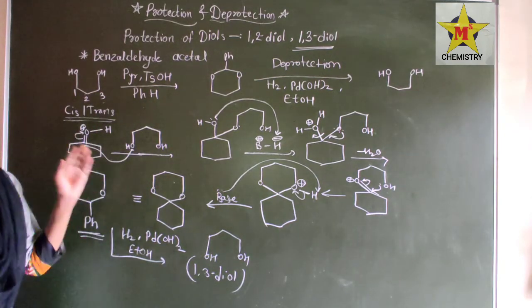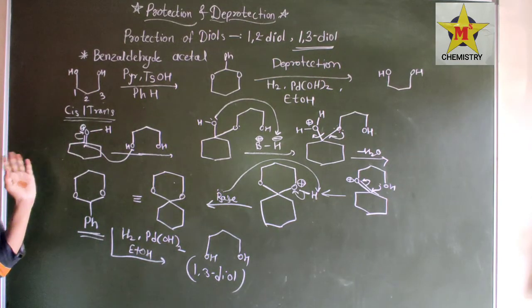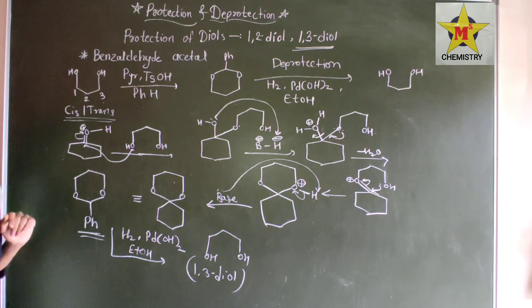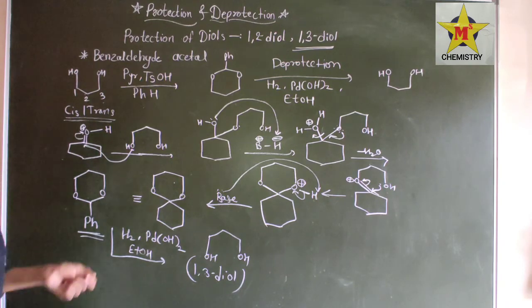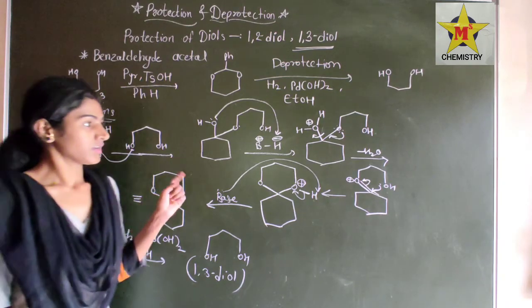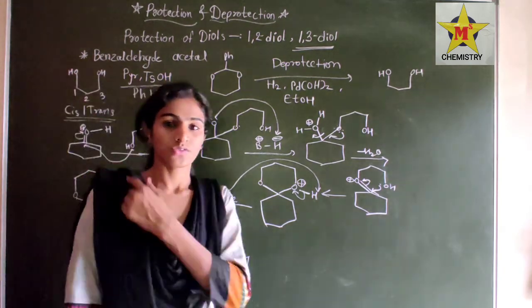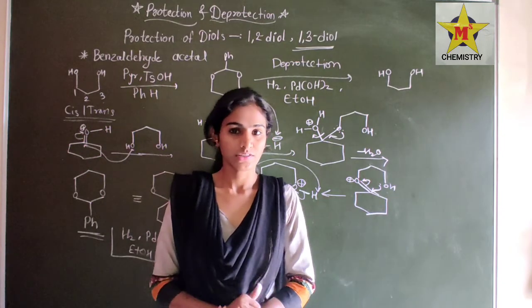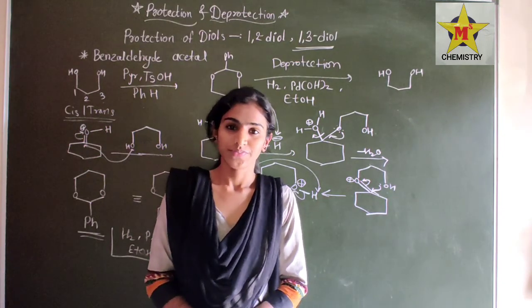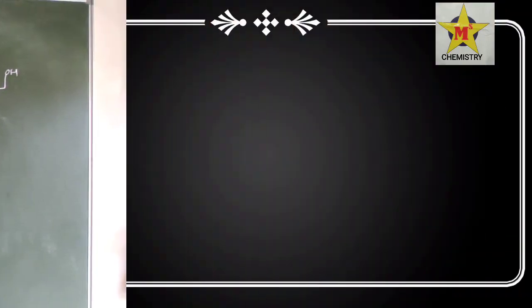We can also write it like this with the Ph group. In this way we got our product and we can protect the one-three diol. For deprotection, we use H2 in presence of Pd(OH)2 in ethanol to deprotect this. In this way our one-three diol protection is also done. I hope you understand this lecture. Thank you so much for watching.